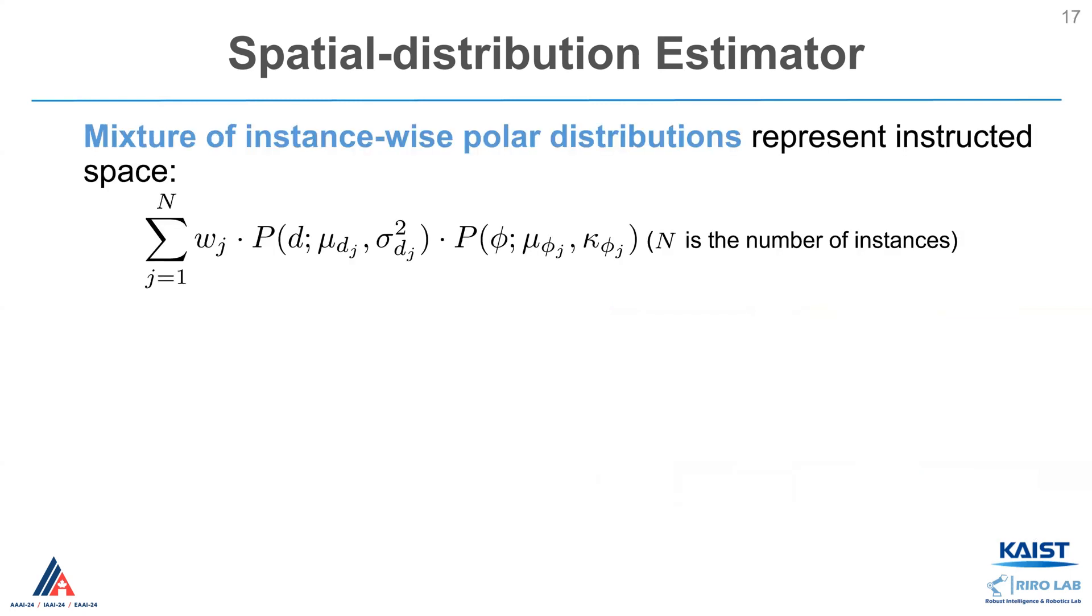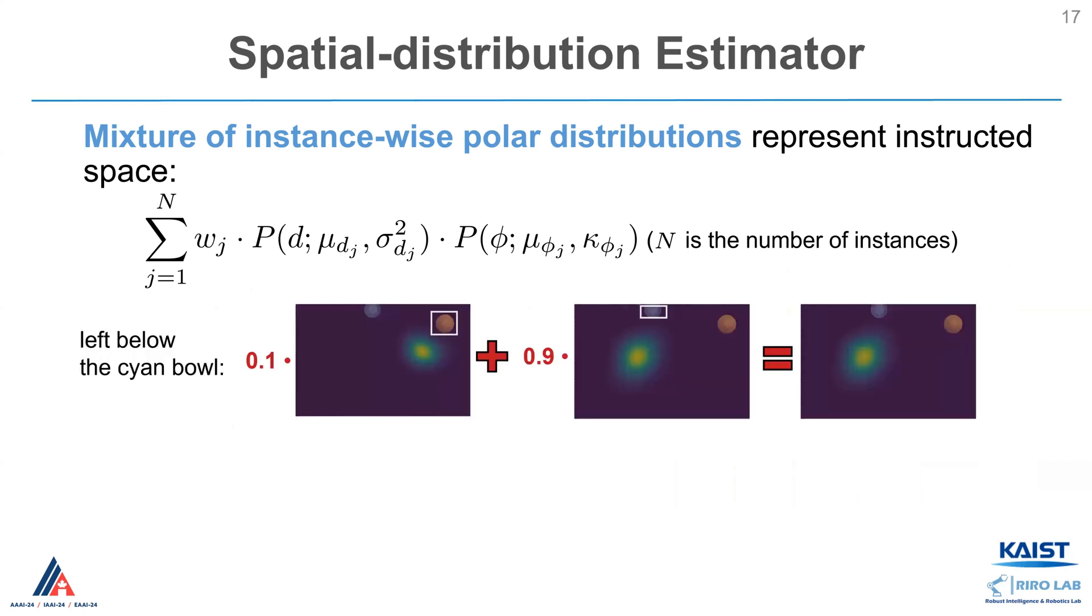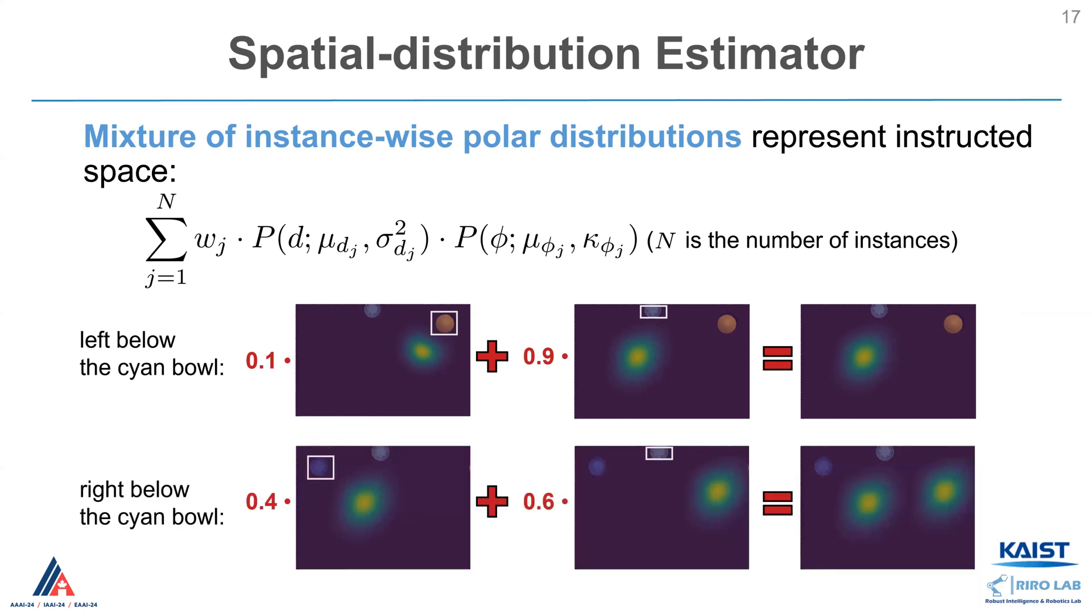To handle complex environments, we model space as a mixture of instance-wise polar distributions. For example, given a phrase left below the cyan bowl, we can obtain instance-wise distributions, and obtain the final distribution by weighted sum, assigning higher weight to the more relevant instance. In cases where multiple relevant instances exist, the weights are distributed accordingly.